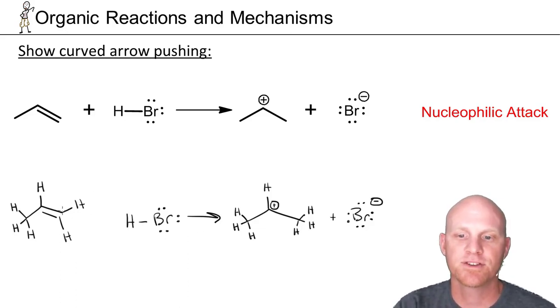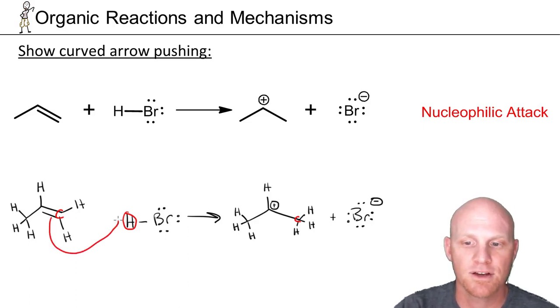The key to this reaction is realizing that this carbon right here has two hydrogens in the reactant, but three hydrogens in the product. This hydrogen right here is the one it's picking up. We can see that the pi bond is broken. Those electrons got to move somewhere. In this case, they're the ones that are actually used to form the bond to the hydrogen.